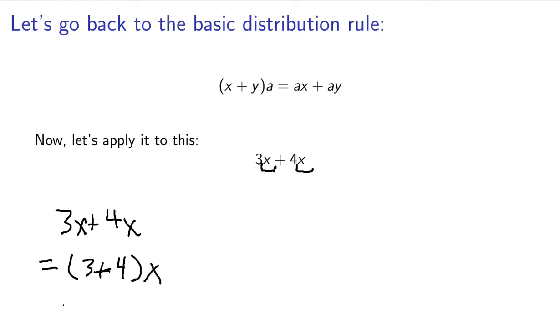And 3 plus 4, we just know that that's equal to 7. So that means we can combine these two, this 3 plus 4, to make 7x. And of course, we usually don't show these individual steps. We just go ahead and go straight to 3x plus 4x equals 7x. And that's perfectly fine.